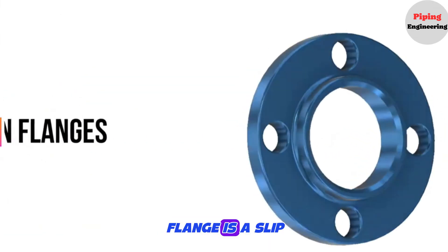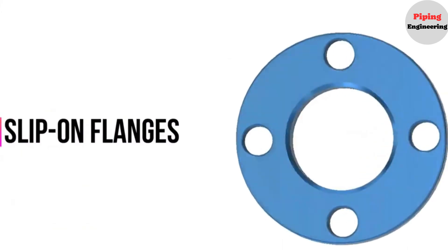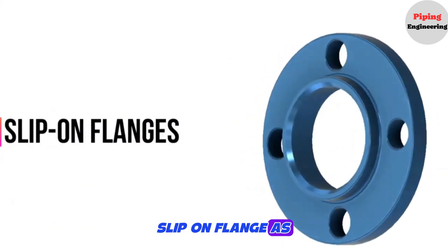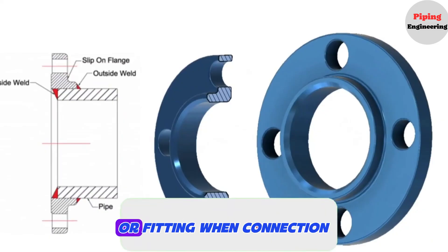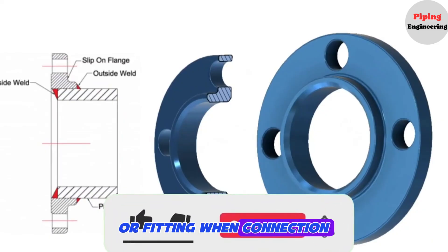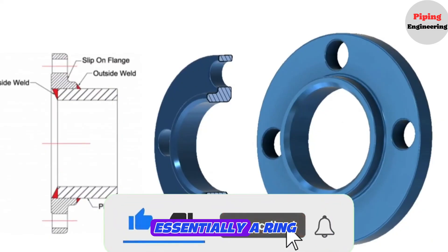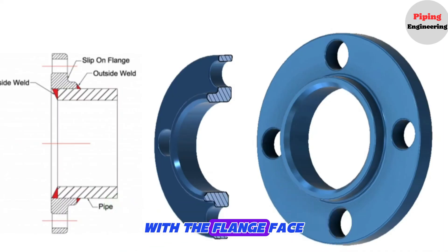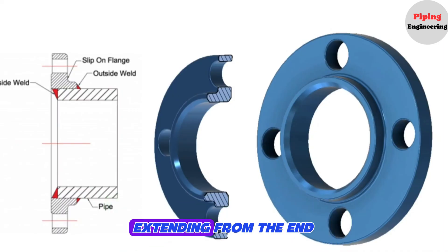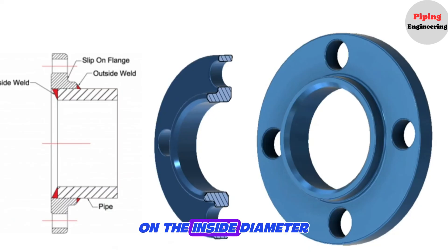The next type of flange is a slip-on flange. As the meaning of the name, it is a flange slipping on the pipe or fitting when making a connection. Slip-on flange is essentially a ring that is placed over the pipe end, with the flange face extending from the end of the pipe by enough distance to apply a weld bead on the inside diameter.